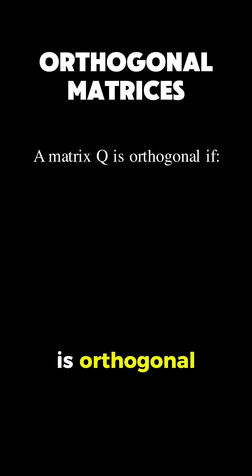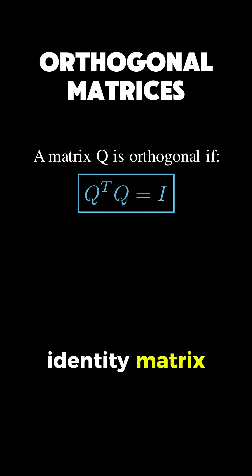A matrix Q is orthogonal if Q transpose Q equals the identity matrix. That's the definition, and it might seem simple at first, but let's unpack what this really means.